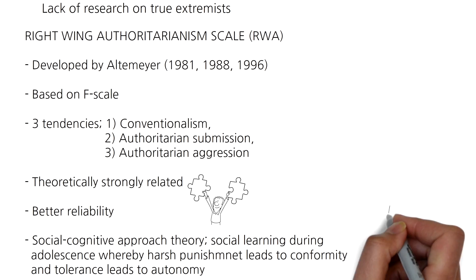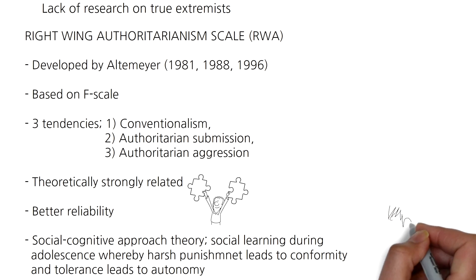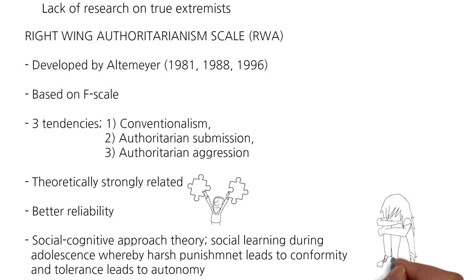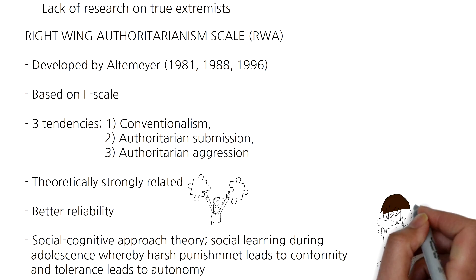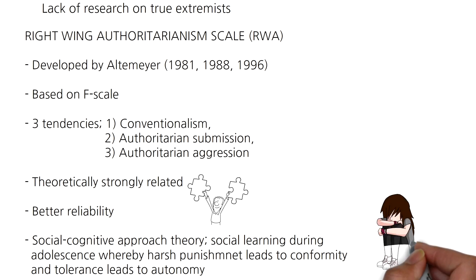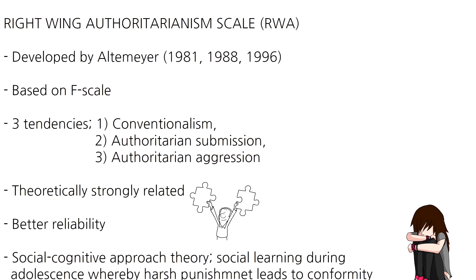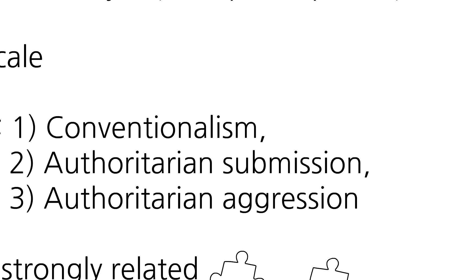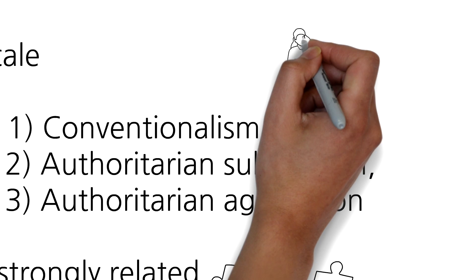The theory behind the scale is based on a social cognitive approach instead of a psychodynamic approach. The social cognitive approach suggests that social learning during adolescence occurs, whereby harsh punishment leads to conformity whereas tolerance leads to autonomy. Here are some example items for the components within the RWA scale.